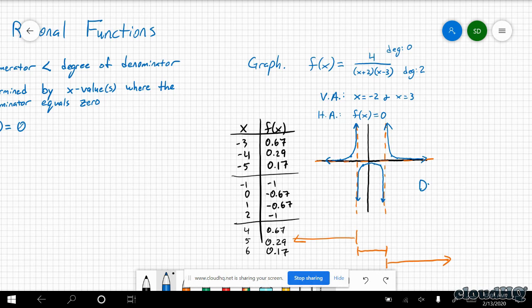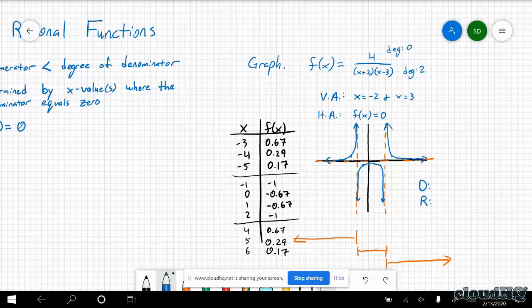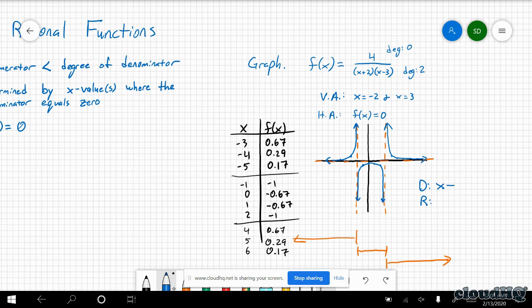Now, what about domain and range? We had two x values we couldn't use this time. So x doesn't equal negative two. Additionally, x doesn't equal positive three. For the range, it never equaled zero. There's actually probably a little bit bigger section because this middle section didn't get super close to zero. I think got to maybe 0.64. So it's probably a little bit bigger area.